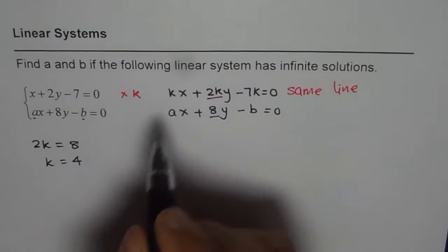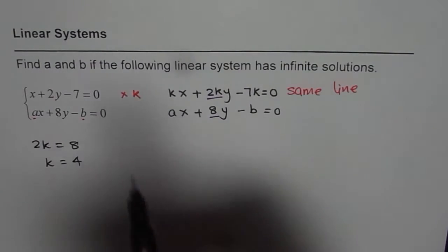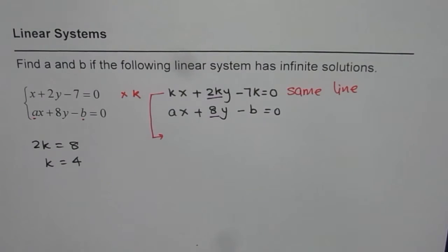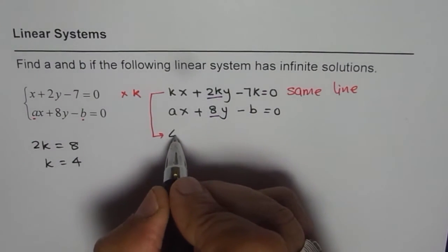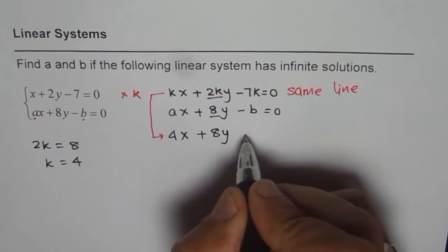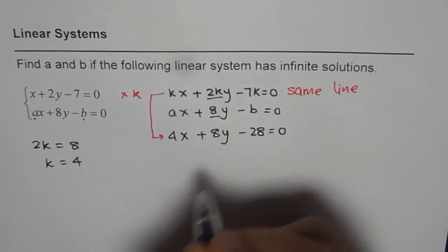Now if k is 4, we can rewrite our equation. So with k = 4, we get the equation 4x + 8y - 28 = 0.